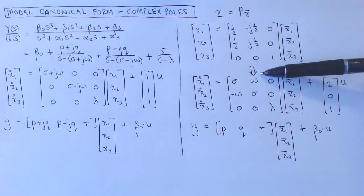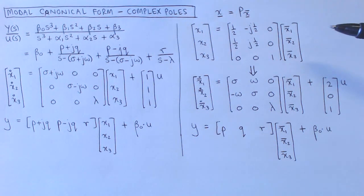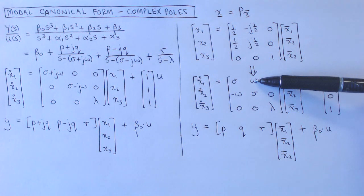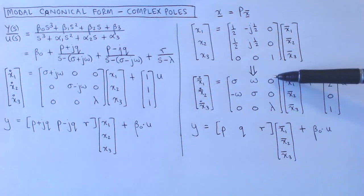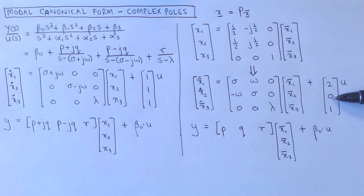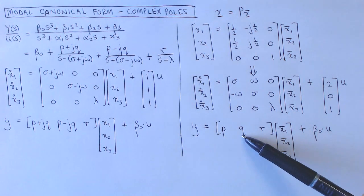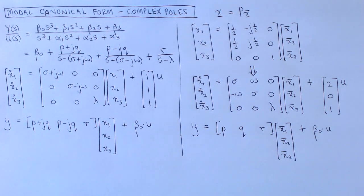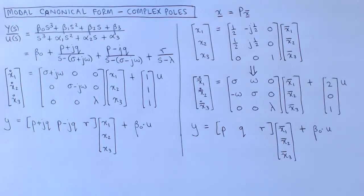After performing the state variable transformation using the procedure developed previously, we get the following state variable system. The new A matrix contains the real and imaginary parts of the complex poles in a two-by-two block, and the rest of the matrix is unchanged. The new B vector contains two and zero for the elements corresponding to the complex poles, and the rest of the vector is unchanged. The new C vector contains the real and imaginary parts of the complex residuals.